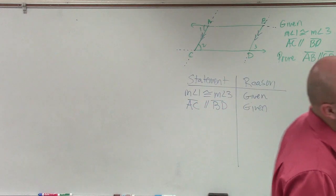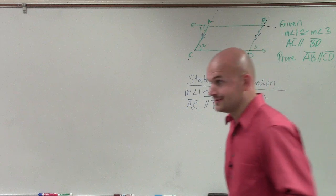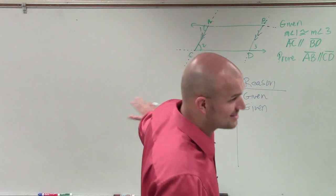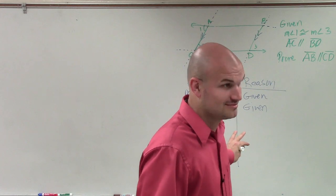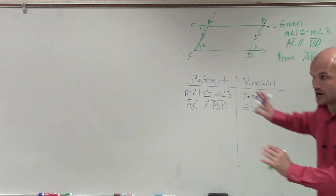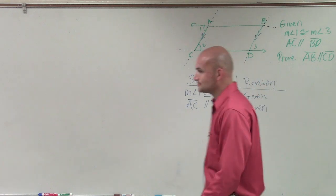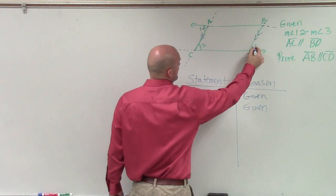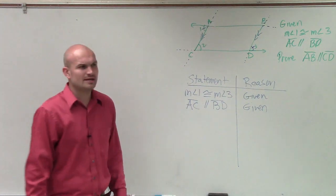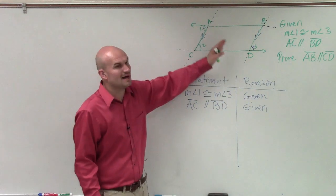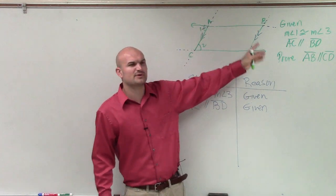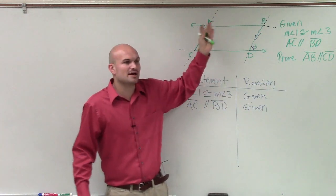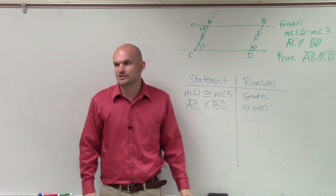So therefore, when I give you a proof and you can't figure it out, I should expect to see at least this amount of information written down. Now, we know this angle is equal to that angle. Because we said these are parallel lines, does anybody know why angle 1 and angle 3 are equal to each other? Obviously it was given, but by using these lines as parallel, why would we say those two angles are equal?